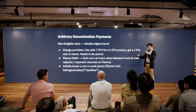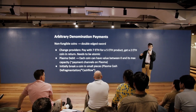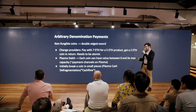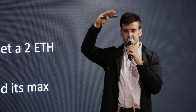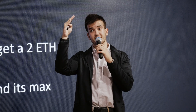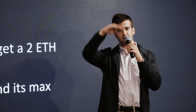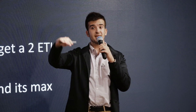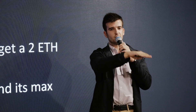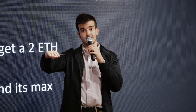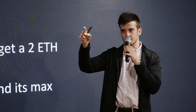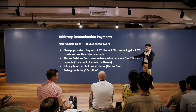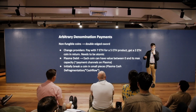The second approach is Plasma Debit: instead of a coin representing a single fixed value, it represents a range — a five-ether coin goes from zero to five. If two coins exist, one at five ether and one at three-out-of-five ether, decreasing one balance by two and increasing the other by two makes a two-ether transaction. This also requires atomicity and is similar to the change provider approach but with different implementation.